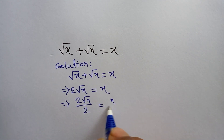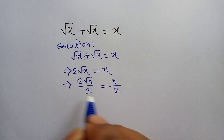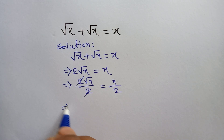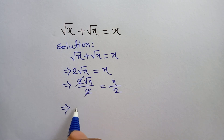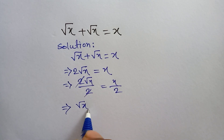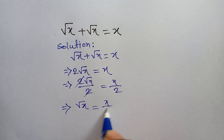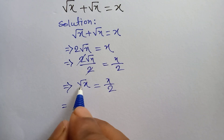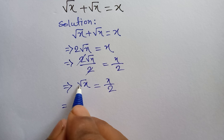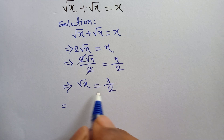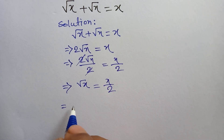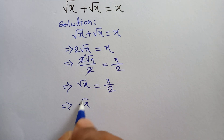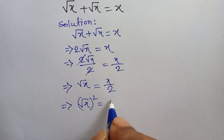This 2 and this 2cancel, so we can write root x is equal to x over 2. Now we eliminate this root by taking a square on both sides, so root x whole square is equal to x over 2 whole square.